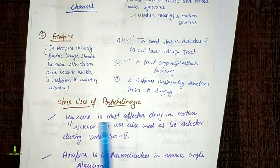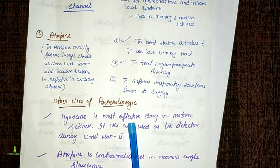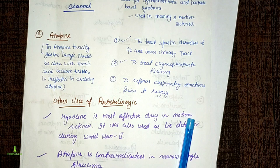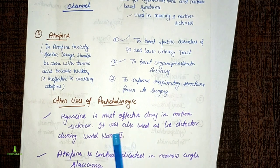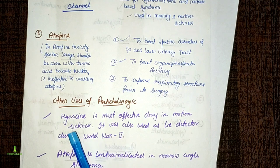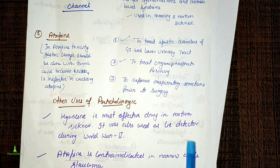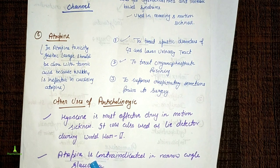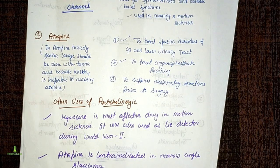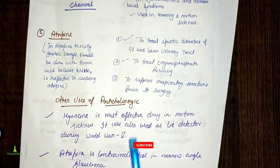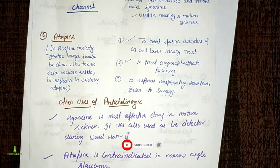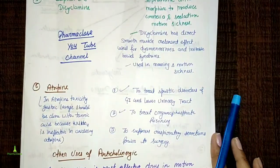Other uses of anticholinergic drugs: hyoscine (scopolamine) is the most effective drug for motion sickness. It was also used as a lie detector during World War II. Atropine is contraindicated in narrow-angle glaucoma because it produces a mydriatic effect, which worsens this condition.